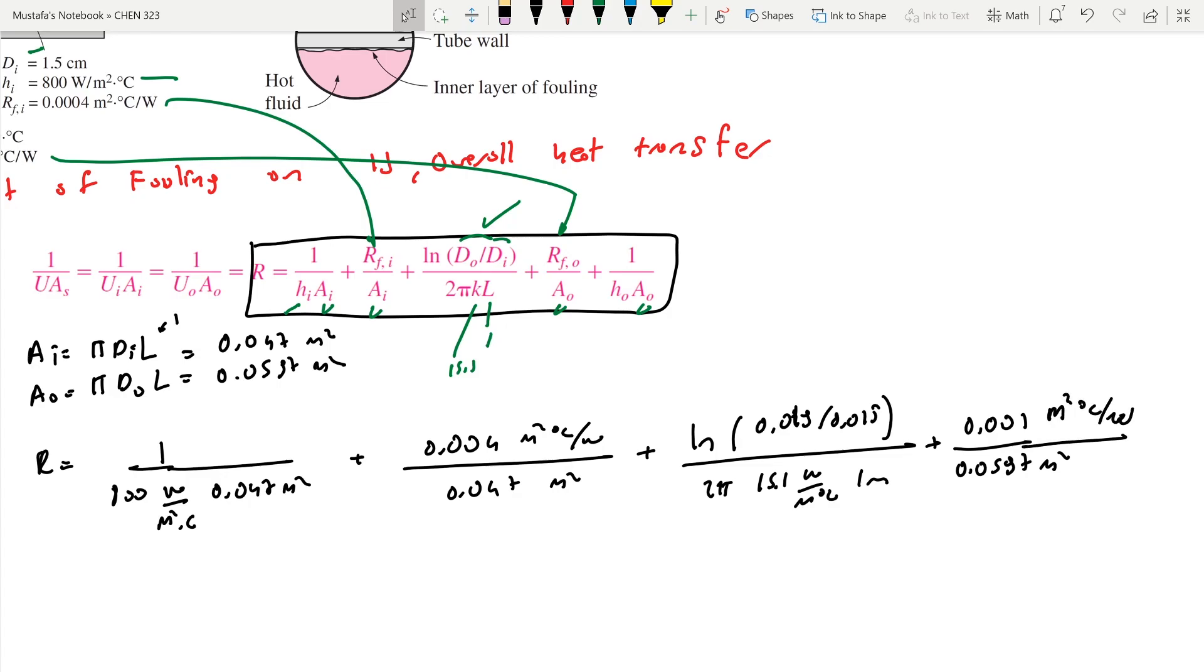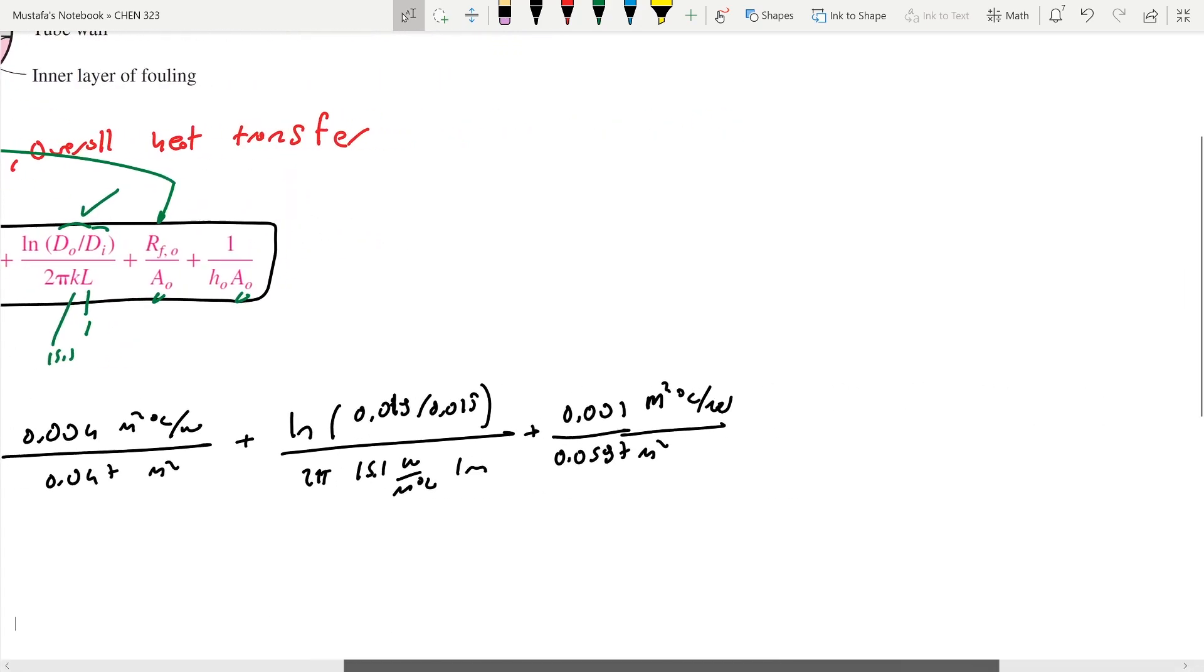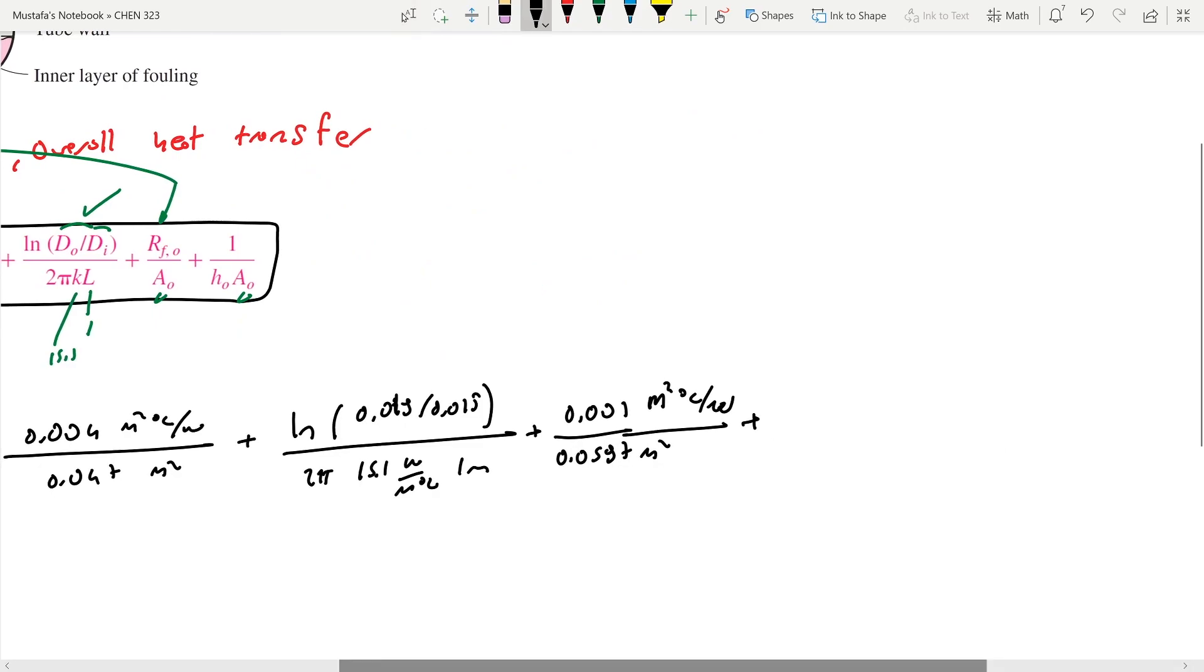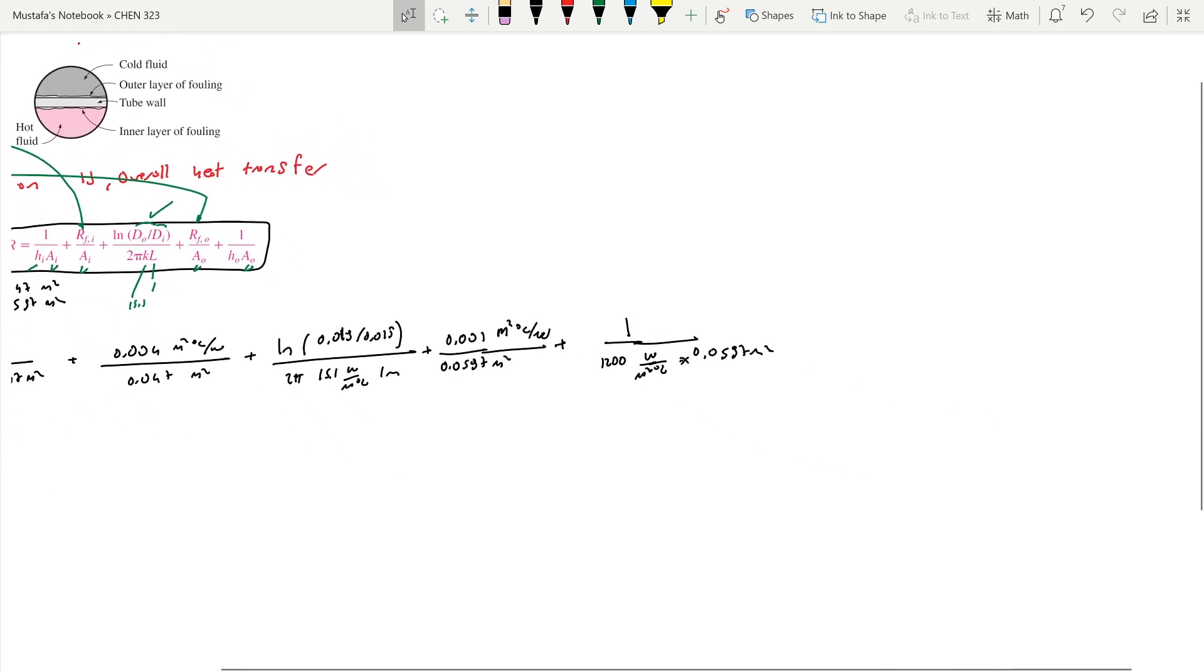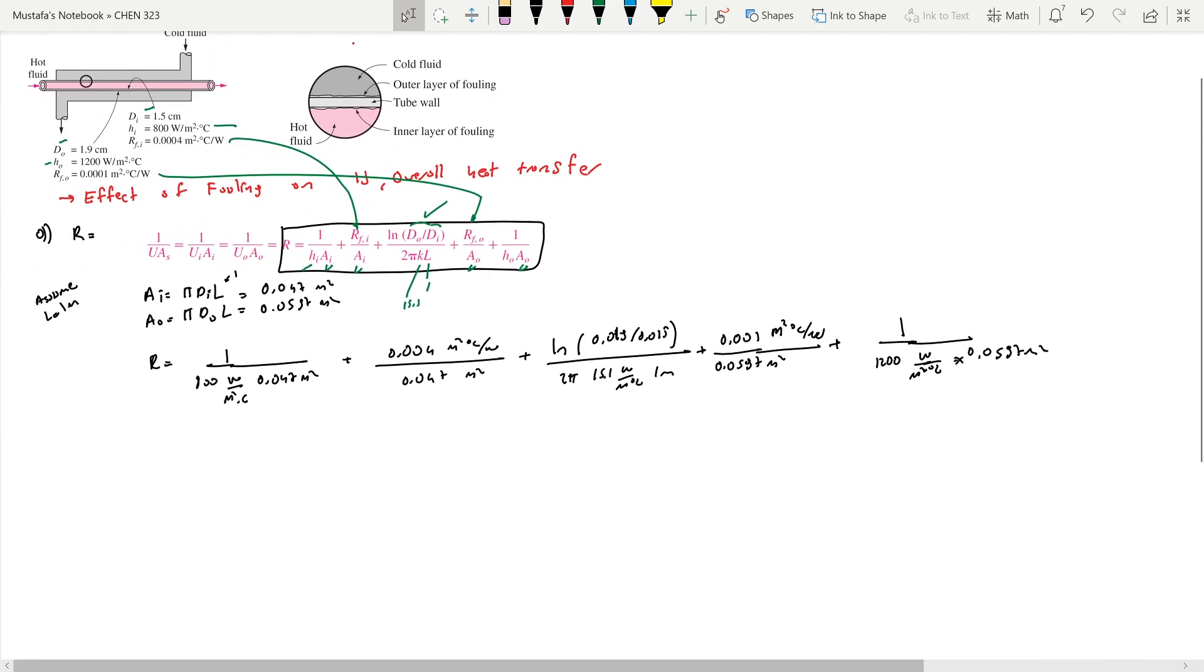Then finally we have the final resistance, which is 1 over ho. ho is 1200 W/m²·°C times outer surface area 0.0597 m². Now if you do all the math here, you'll get Rtotal = 0.0532 °C/W.